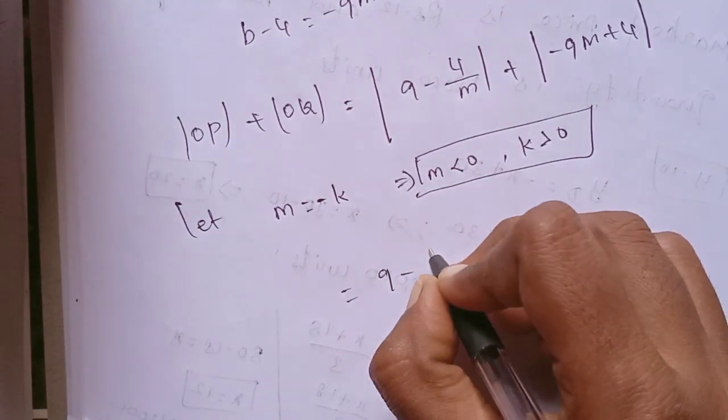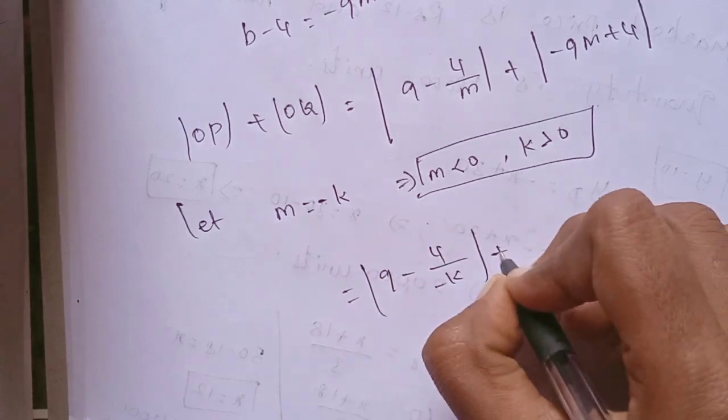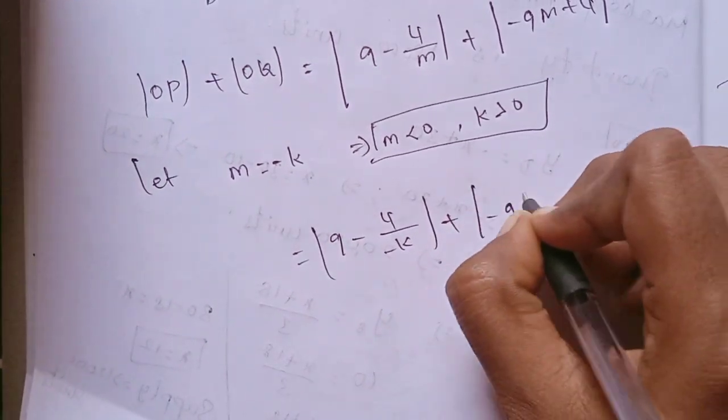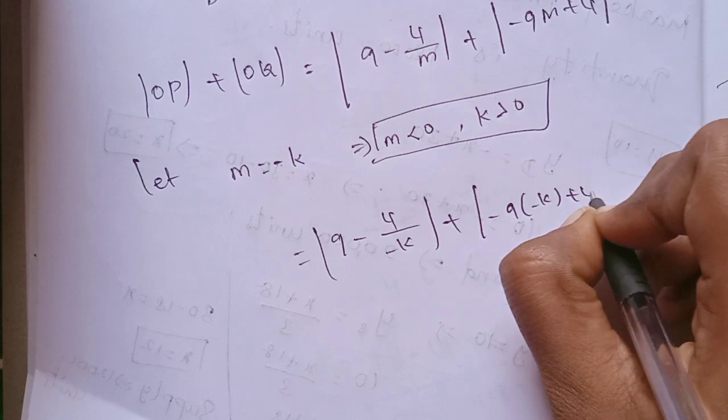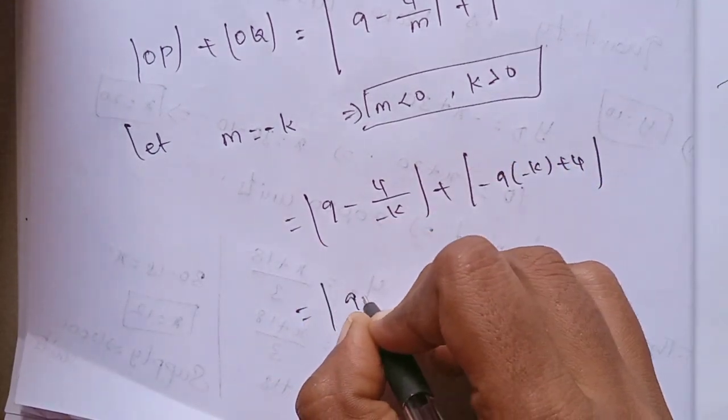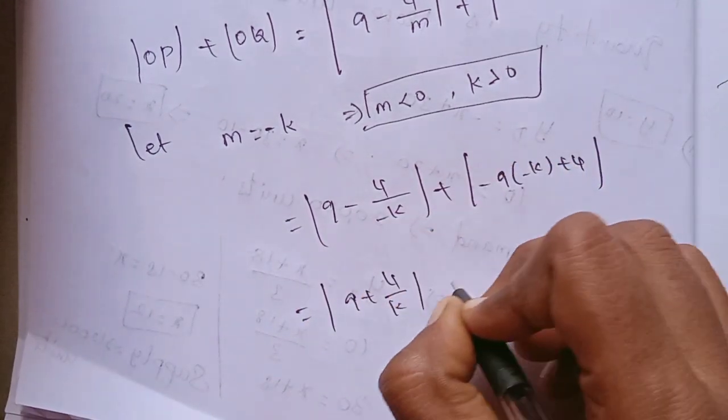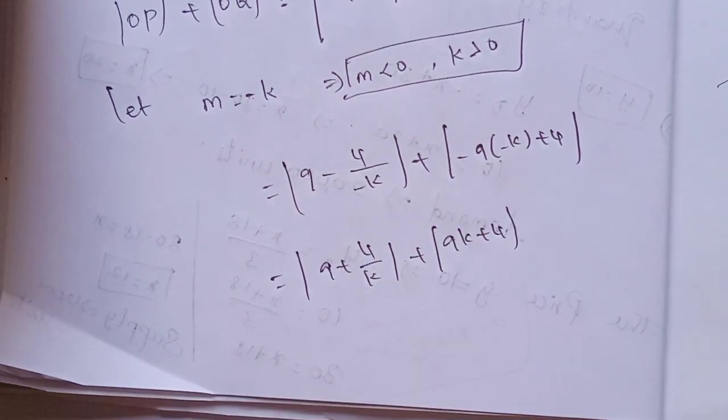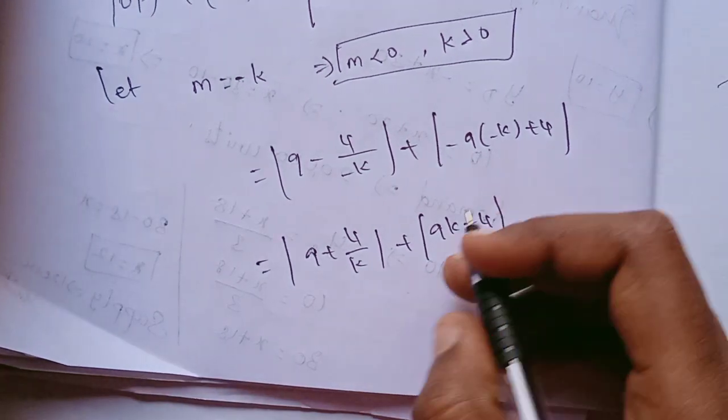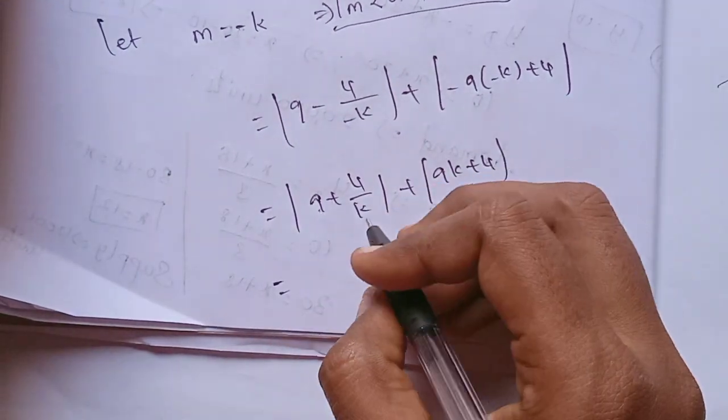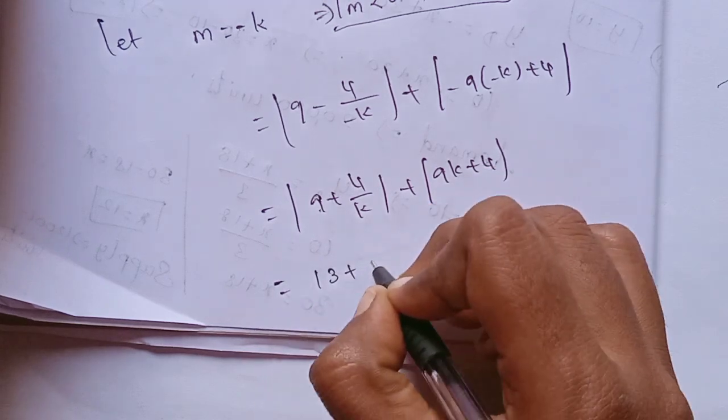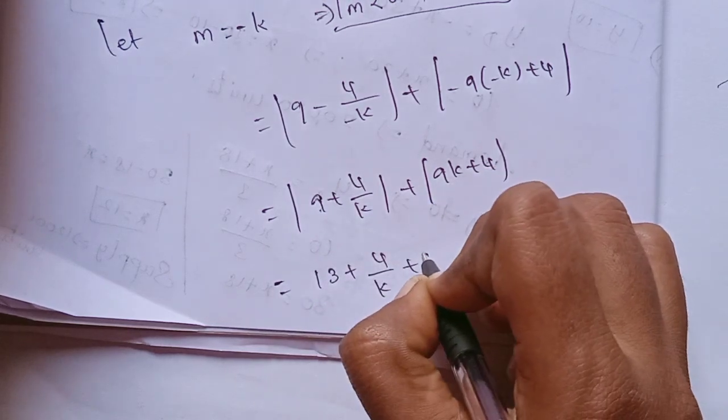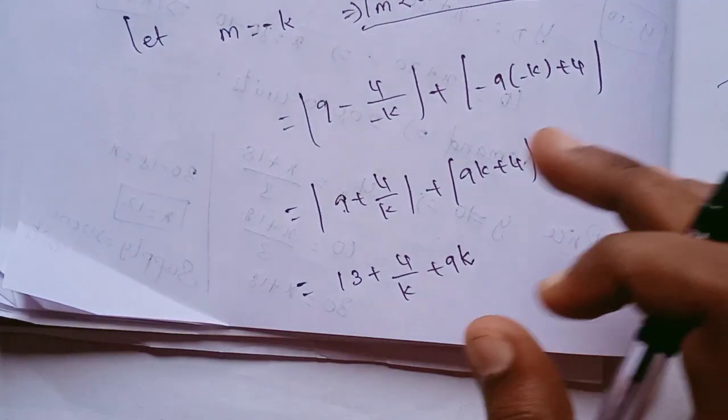9 - 4/(-k) plus -9(-k) + 4. Simplify: 9 + 4/k + 9k + 4, which equals 13 + 4/k + 9k.